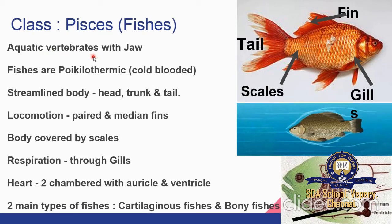Next class is Pisces — aquatic vertebrates with jaws. Fishes are poikilothermic (cold-blooded) and the streamlined body is divisible into head, trunk, and tail. Locomotion is by paired and median fins. The body is covered by scales and respiration is through gills. The heart is two-chambered with an auricle and a ventricle. There are two main types: cartilaginous fishes with skeleton made of cartilage (e.g., sharks, skates) and bony fishes with skeleton made of bones (e.g., carps, mullets).